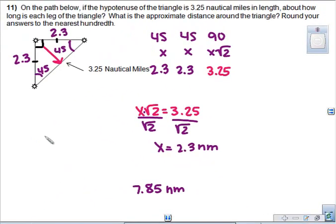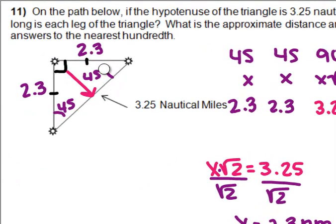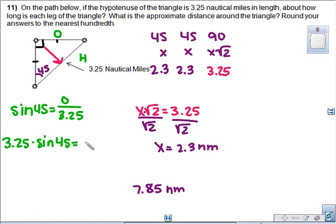Now if you wanted to do it with trig, which I think I would do because I think trig is easier than special right triangles, just pick one of your angles. It doesn't matter which one. And label it. So we've got this one as 45. And I'm looking for this opposite side, and I know the hypotenuse side. O and H is sine. So sine of the 45 degree angle is opposite, unknown, over hypotenuse, 3.25. When you know the bottom piece, you just multiply it over. So 3.25 times sine of 45 is equal to the opposite side.